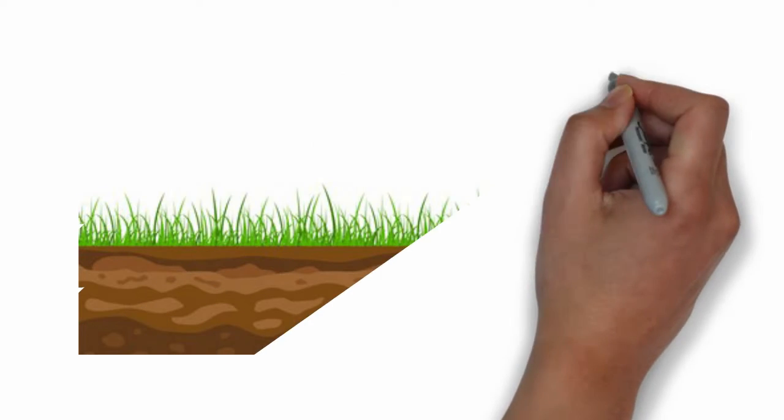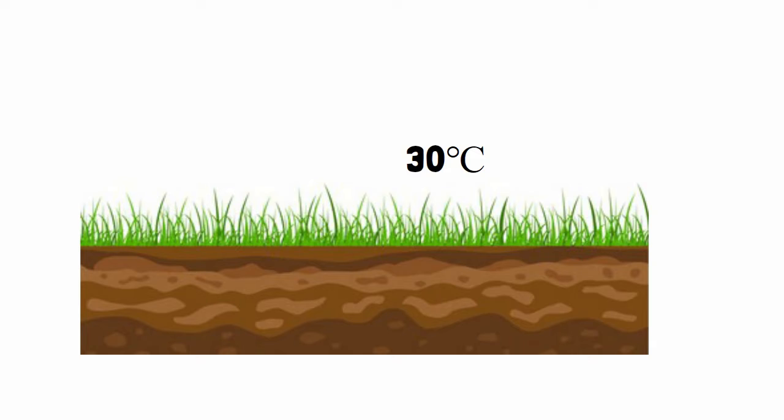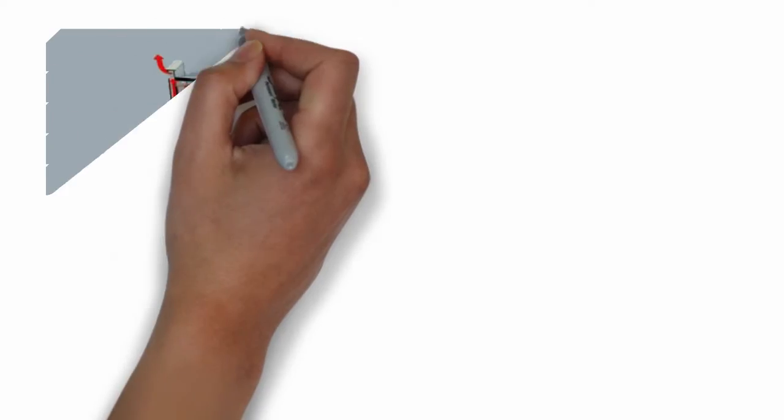The temperature below the earth is constant throughout the year. By comparing air temperature and ground temperature there is a difference of minimum 2 degrees to 6 degrees celsius. By using this principle,